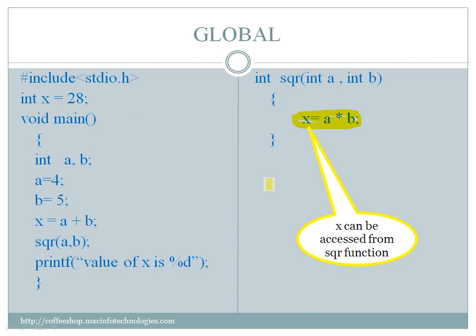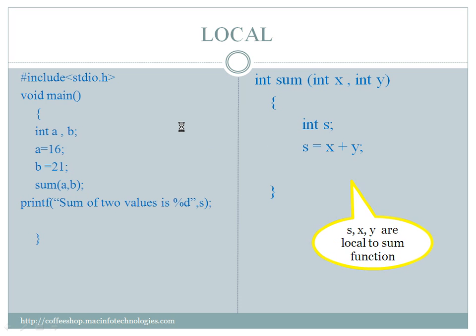You can access x from main function and from sqr function — this is how we use a global variable from any function in the program. But if you try to access a variable like 'a' that belongs to a specific function, that would be a local variable, which we will see next.